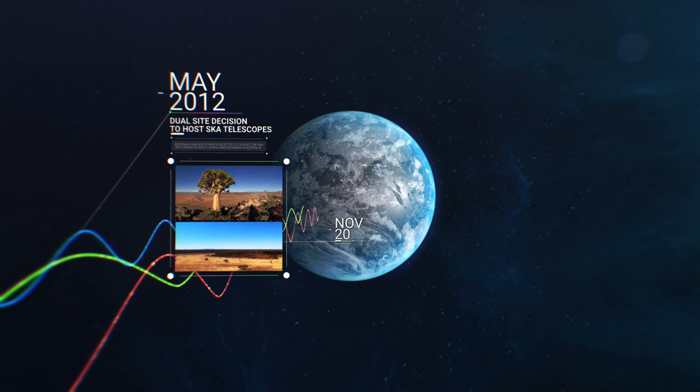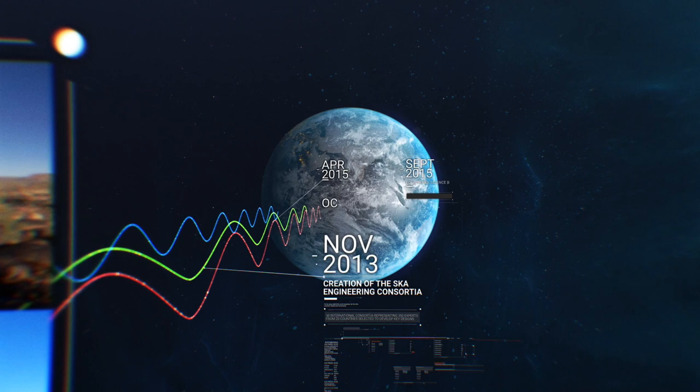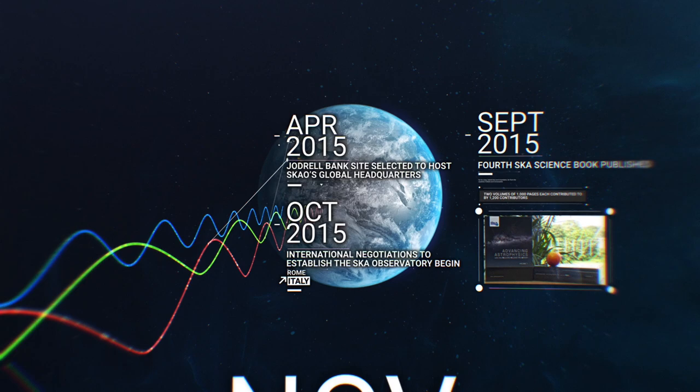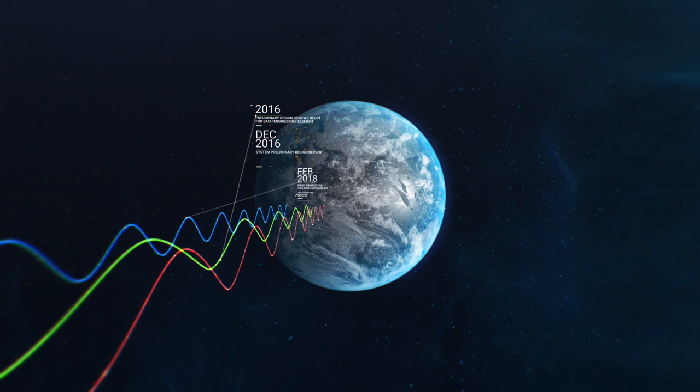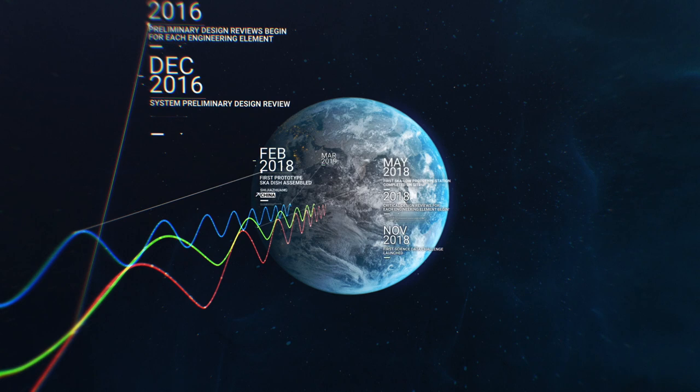Then the final push started on the engineering front. Negotiations began to create an intergovernmental organisation. We built prototypes. The SKA treaty was signed. We moved into our permanent home. We completed our second objective by signing off on the engineering plans for the telescopes. And finally, completed the third by seeing the birth of the SKA Observatory, which brings us to where we are now.